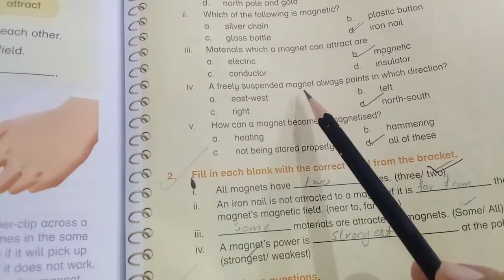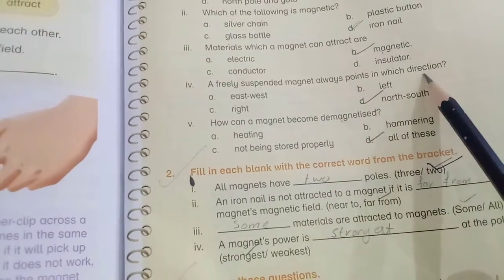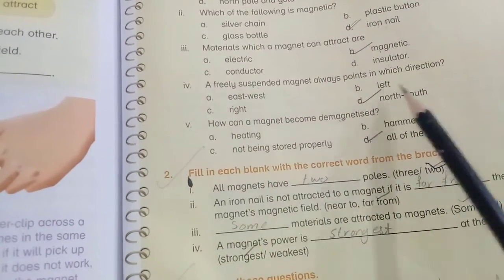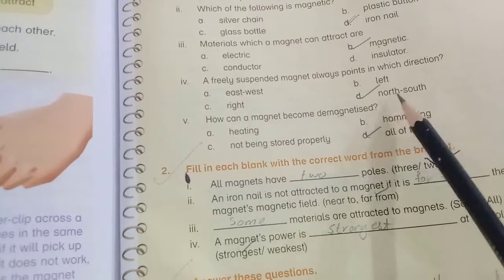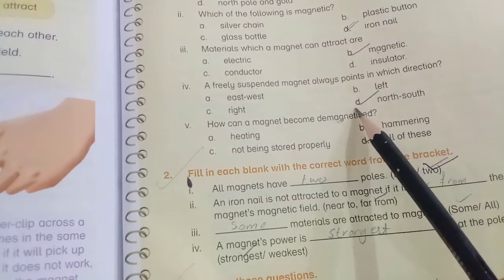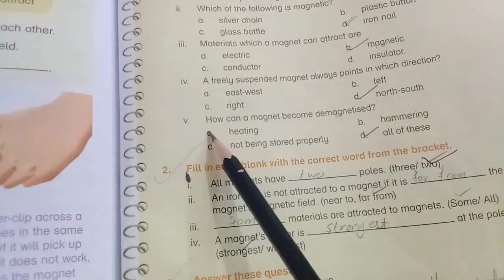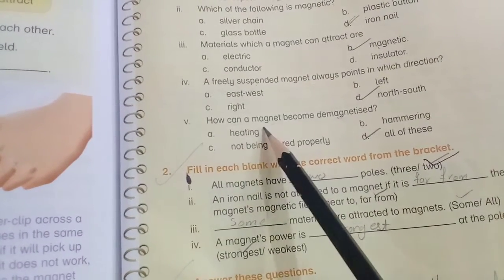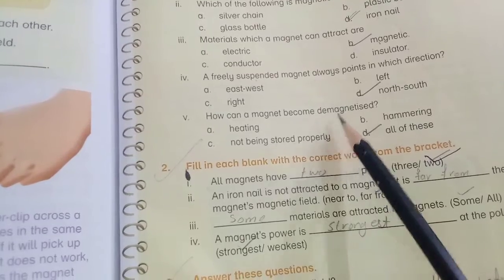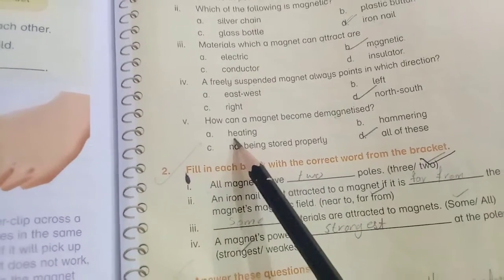A freely suspended magnet always points in which direction: east-west, left-right, north-south? And D is the correct answer: north-south. How can a magnet become demagnetized?